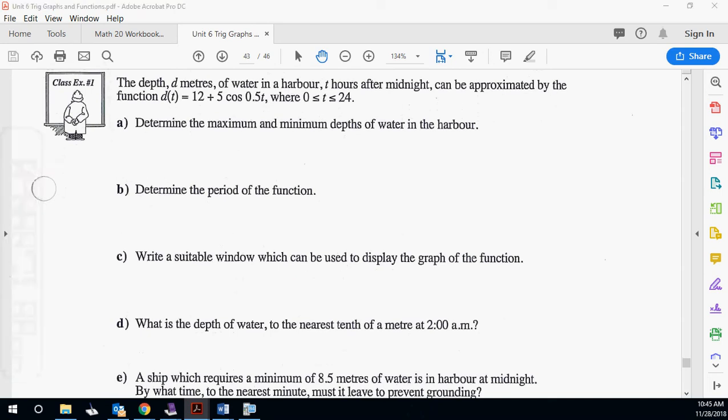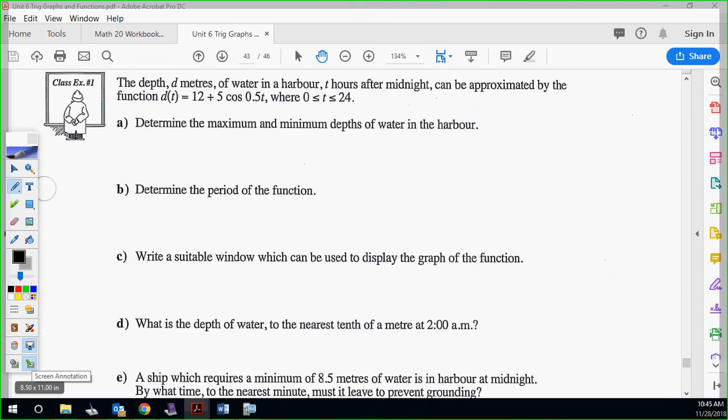So the depth d meters of water in a harbor, t hours after midnight, can be approximated by this function: 12 plus 5 cosine 0.5t, where t is between 0 and 24 for 24 hours. So determine the maximum and minimum depths of water in the harbor. Max is a plus d, so that's going to be 17 meters. 12 plus 5. The min is negative a plus d, so that's negative 5 plus 12, so 7 meters.